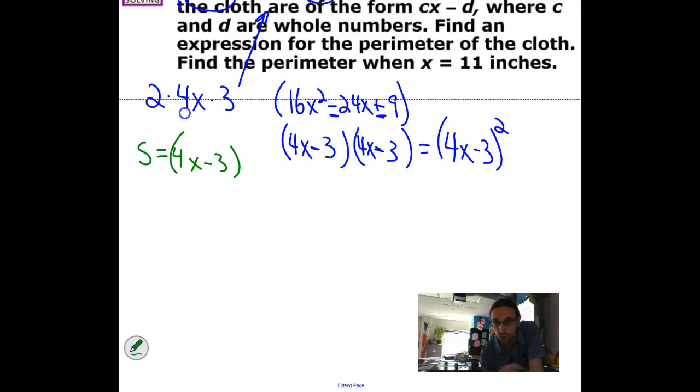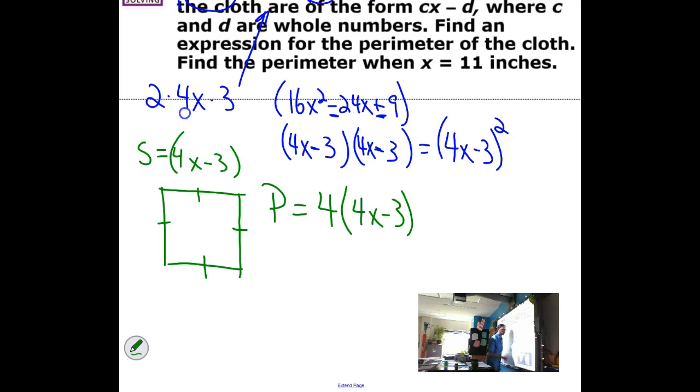Now, the question is, find an expression for the perimeter of the cloth. Well, the perimeter is the length all the way around, and in this case, I know it's a square, so I add up the 4 sides. So, here it is. Wait a minute. The perimeter is equal to 4 times 4X minus 3. Now, I don't actually have to multiply that. I don't have to distribute that 4 right now because it's in factored form. If you want to distribute that 4, you can do it. You're going to get the same setup. So, in this case, we'll just do like this. And we get 16X minus 12.